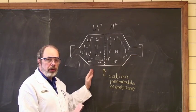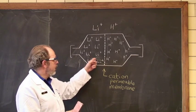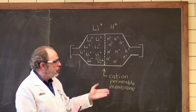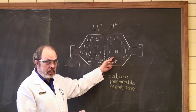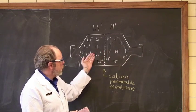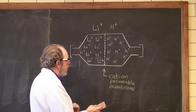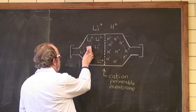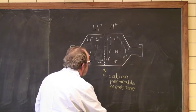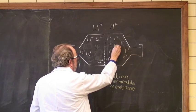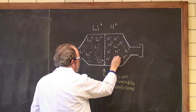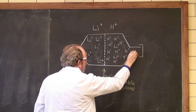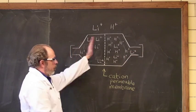There is a concentration gradient between the two. The concentration of lithium is very high here, and the concentration of lithium over here is zero. So there is a push to get lithium over this side. It will happen. It's cation permeable. So let's move a few of these lithium ions, and they make it over to this side of the membrane.